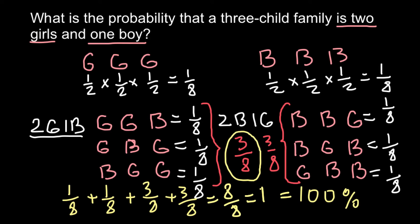You also have to understand the difference when a question doesn't specify an order of events. For example, re-reading today's question — 'what is the probability that a three-child family has two girls and one boy?' — this question does not give us a certain order in which boys and girls must be born. As you can see, different variants are possible, so we have to add the probabilities of each sequence of independent events.